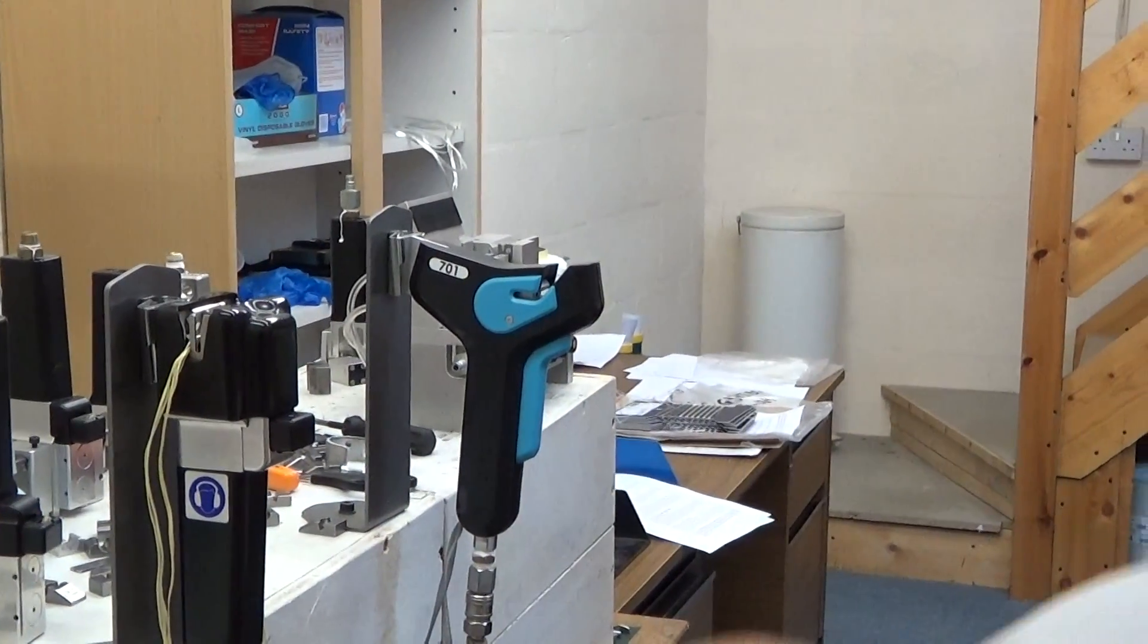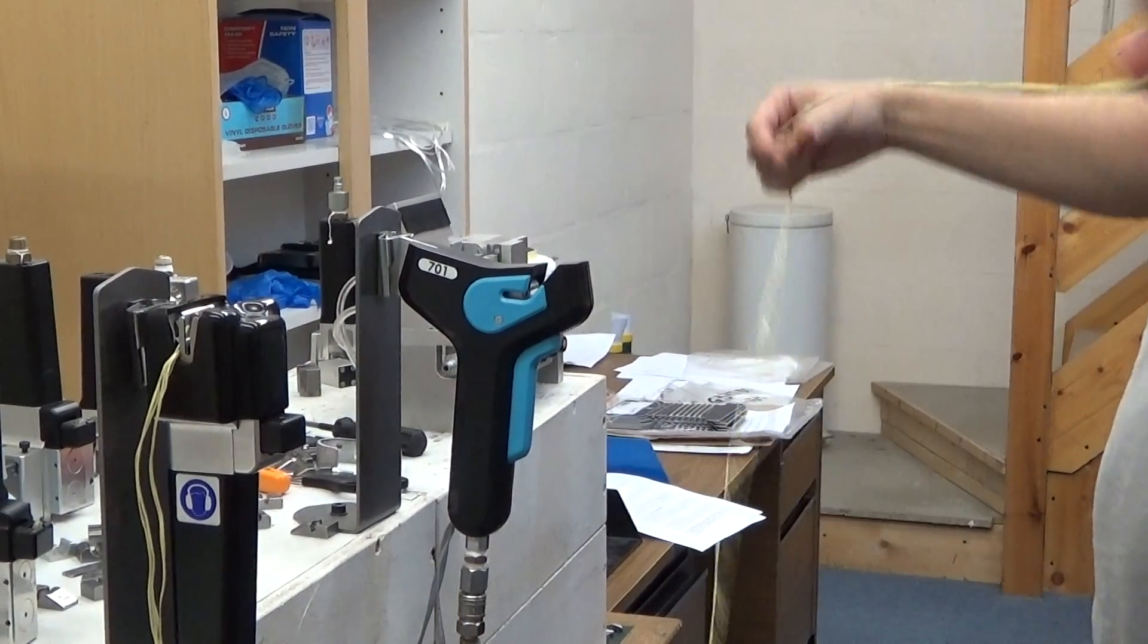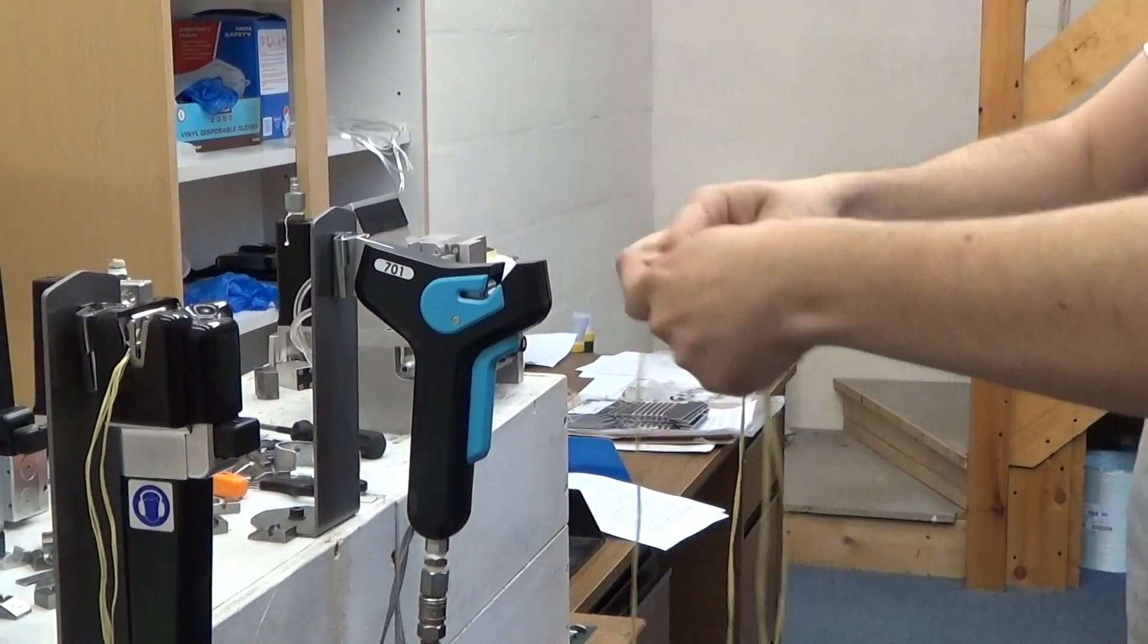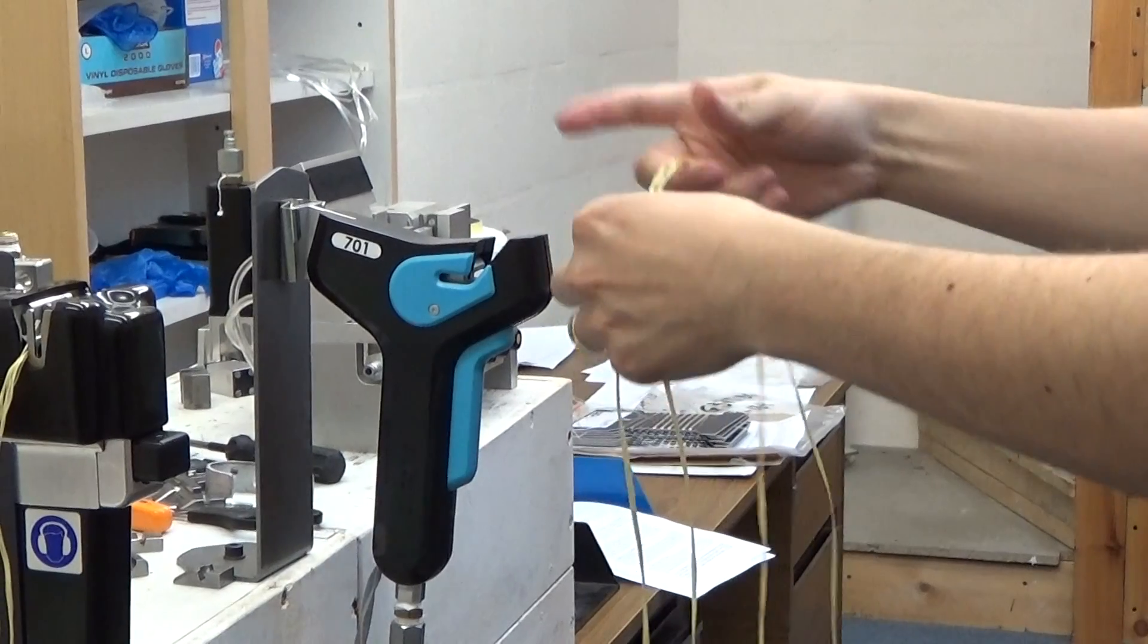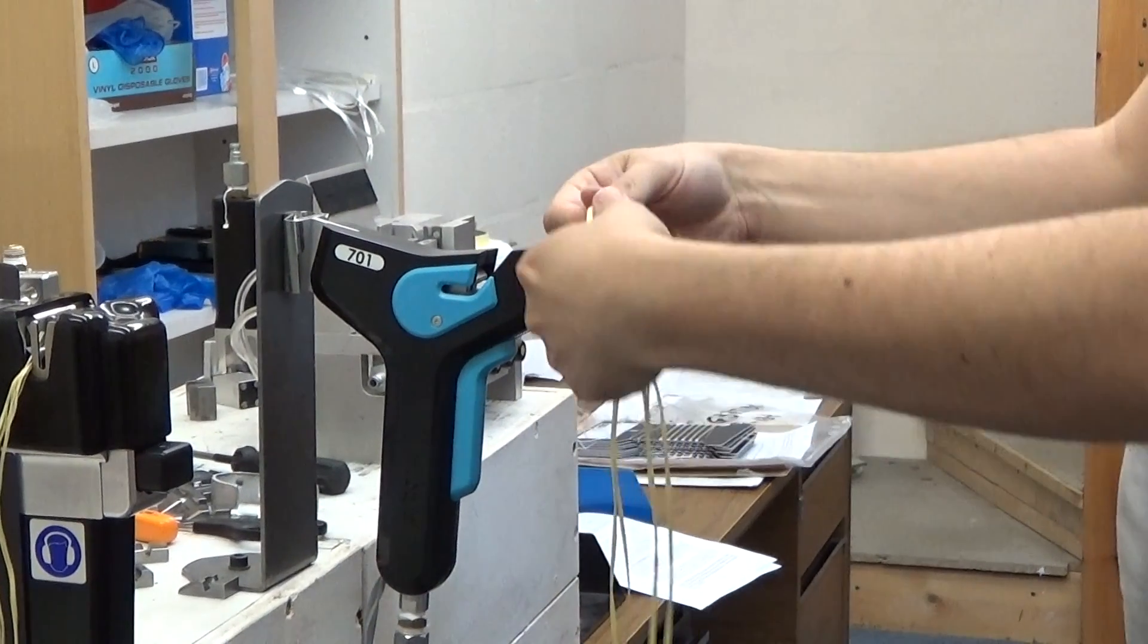And this is the model 701. Whereas the model 111 has automatic cutting, the model 701 is manual cutting.